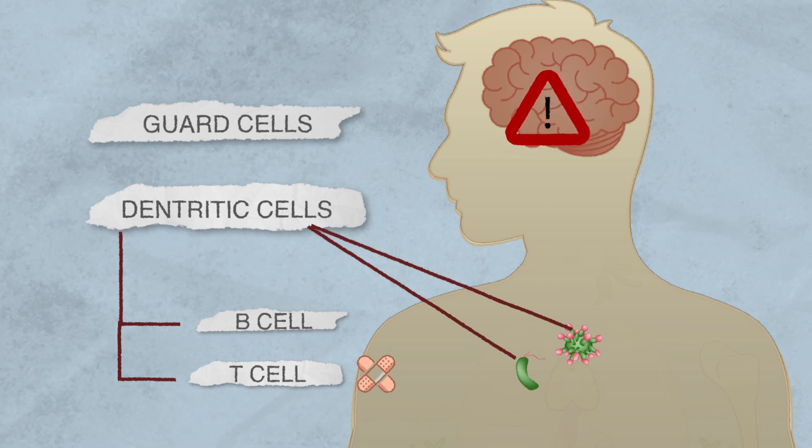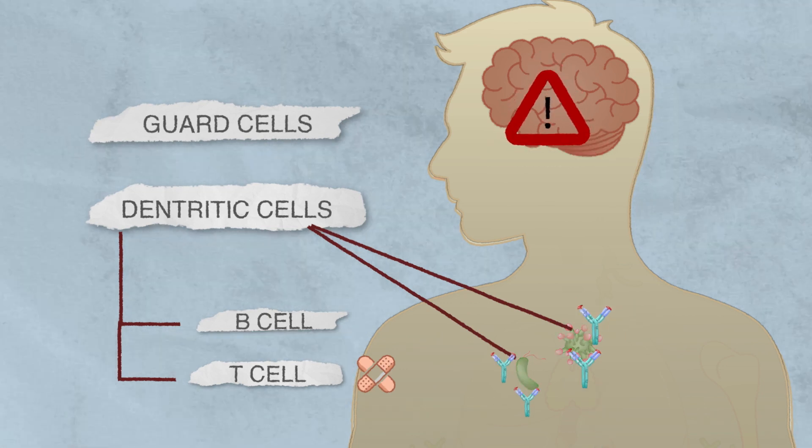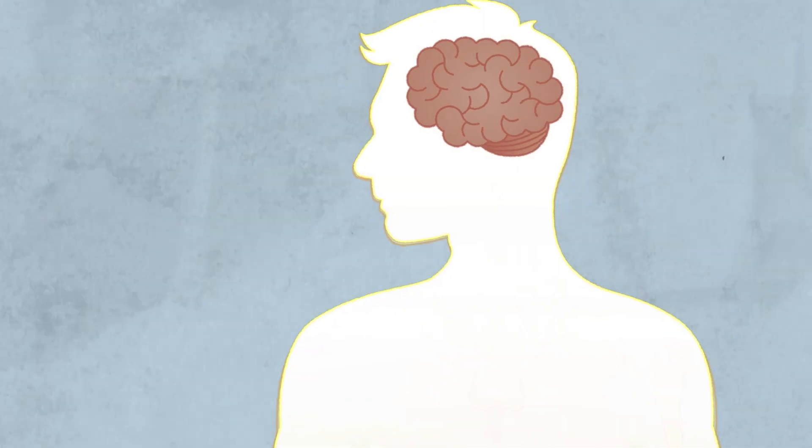Now, all hell breaks loose. B cells start producing antibodies. These antibodies bind to the intruders and kill them. As the immune cell numbers increase, they kill all of these intruders, and we are saved.